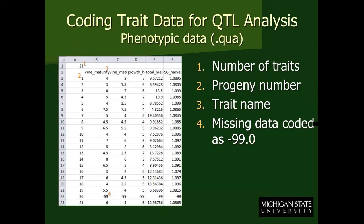After the marker ordering, we moved forward to do the QTL analysis. There is also some formatting of the phenotypic data that needs to be done before it goes into Tetraploid Map. We start with the number of traits being entered — we had 21 different traits. Then it's a list of the progeny, in the same order as was used for the genotypes, followed by the different trait names and the data for those traits. Any missing data is coded as a minus 99.